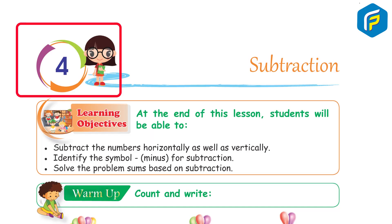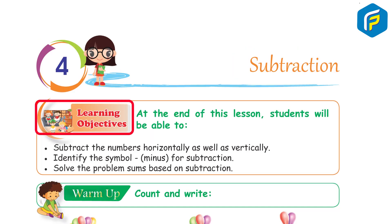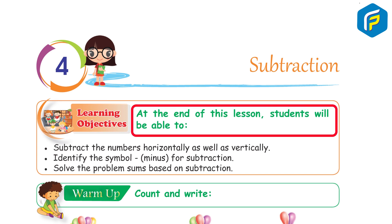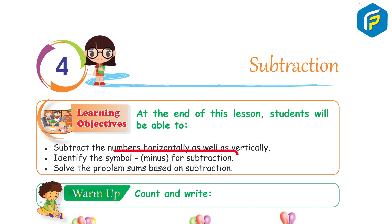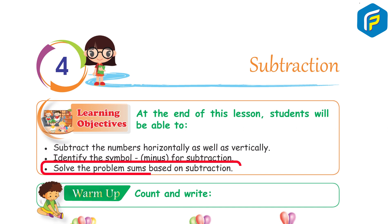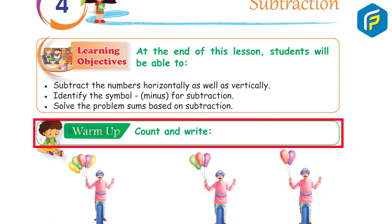Chapter 4: Subtraction. Learning objectives: At the end of this lesson, students will be able to subtract numbers horizontally as well as vertically, identify the symbol minus for subtraction, and solve problem sums based on subtraction.